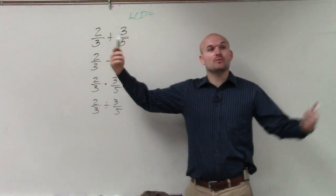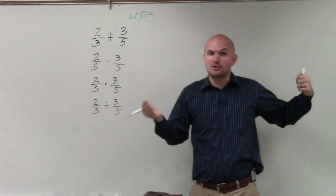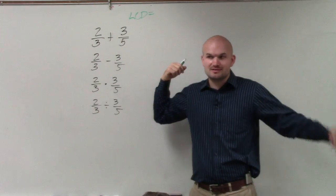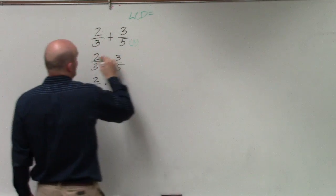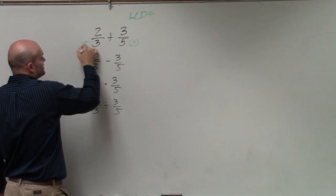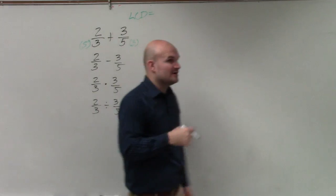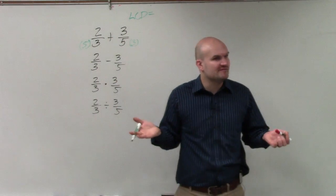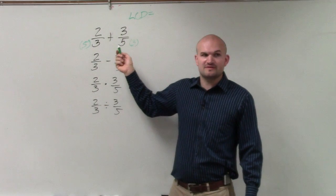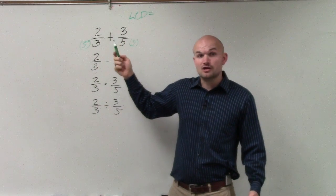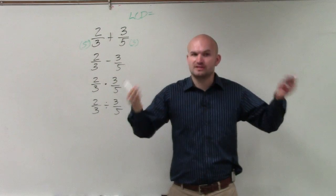So we look at 3 and 5. We want to say what is the smallest number that 3 and 5 both divide into, and that number, Hunter, is 15. So therefore I need to multiply 3 times 5 and 5 times 3. However, if I just multiply the denominator I'm changing the value of the fraction, right? 3 over 5 is not the same as 3 over 15. Would you guys agree? So we want to produce what we call equivalent fractions.